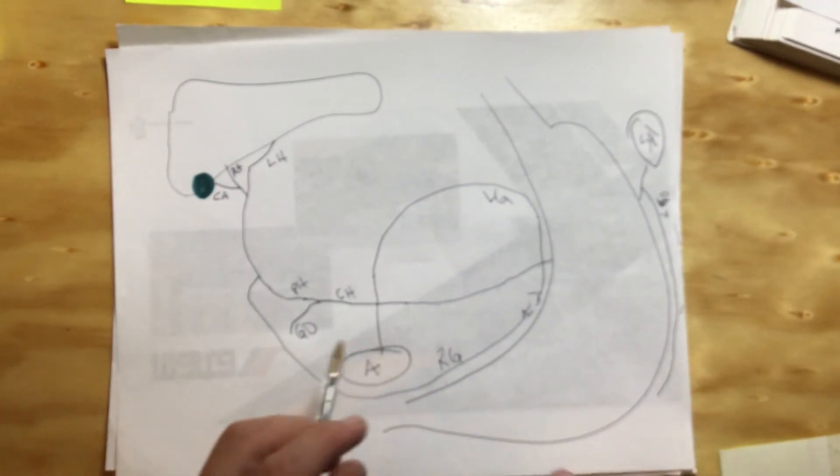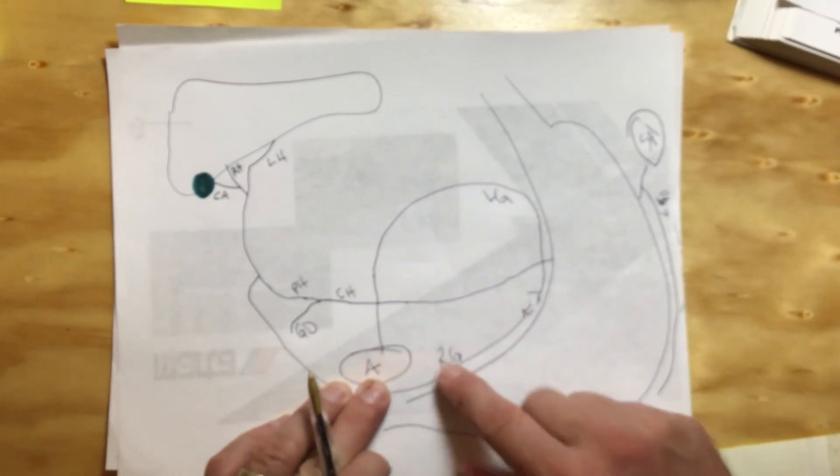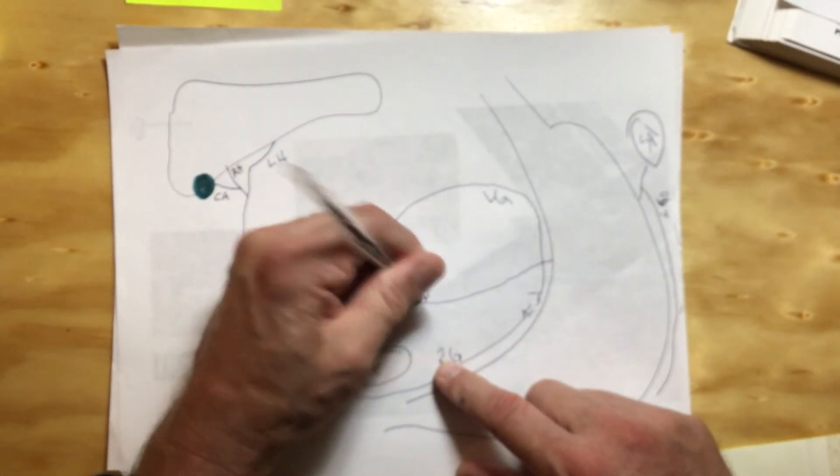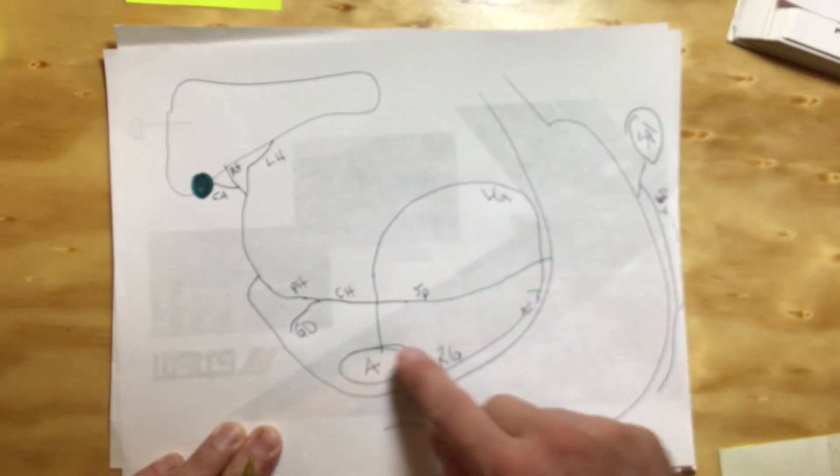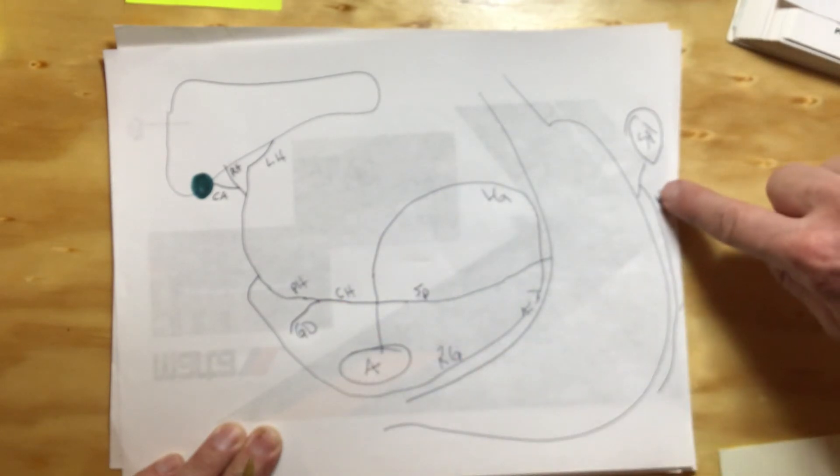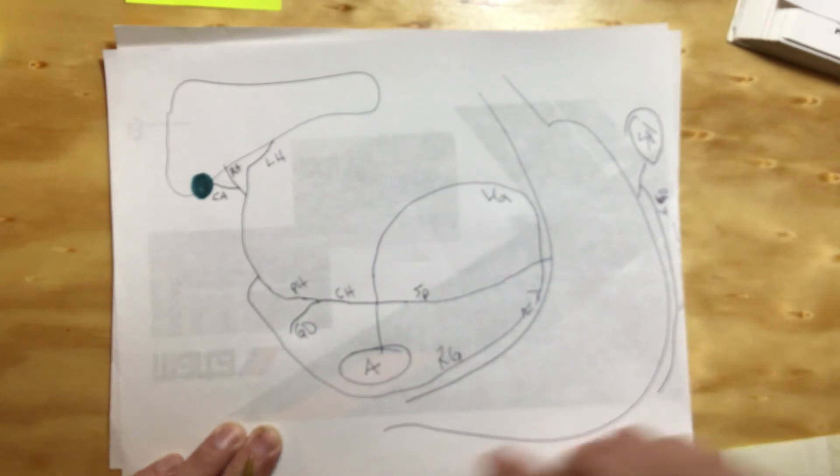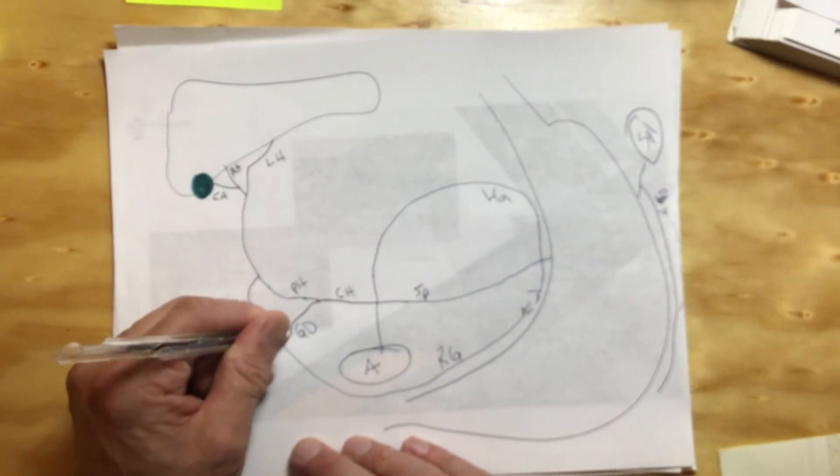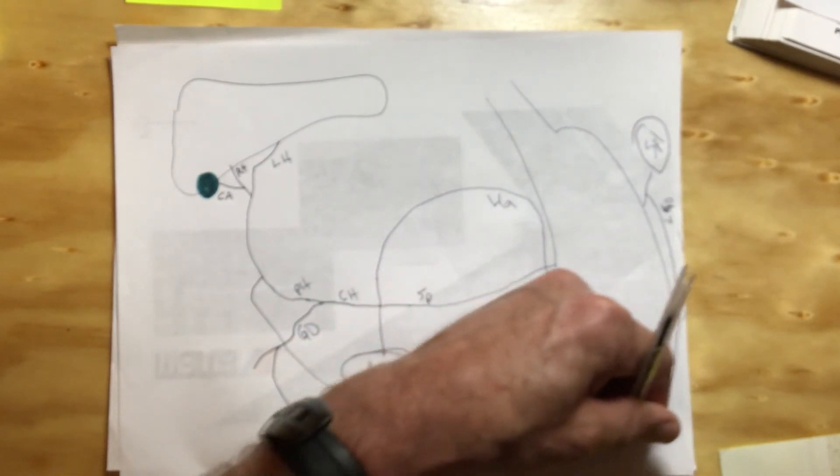So far we've got, we should know our three major branches off the celiac trunk. We've got our splenic, our left gastric, and our common hepatic. The splenic gives off the gastro-mental, the left gastro-mental. This gastroduodenal is coming down here, and it gives off the right gastro-mental.